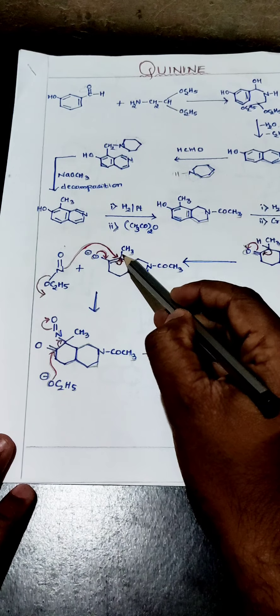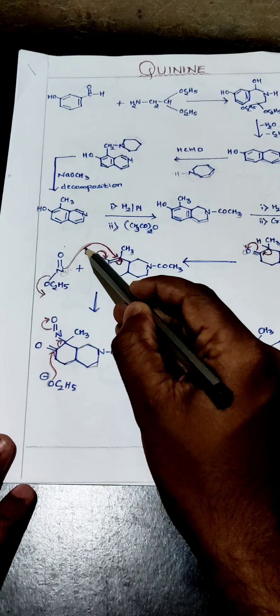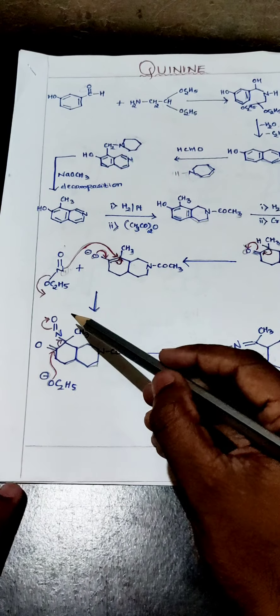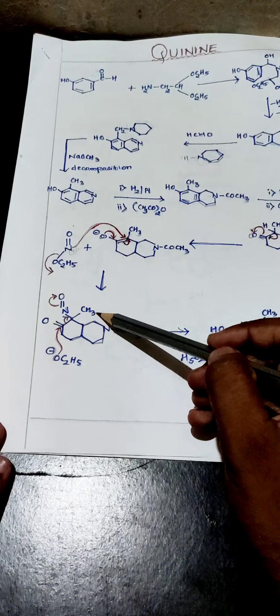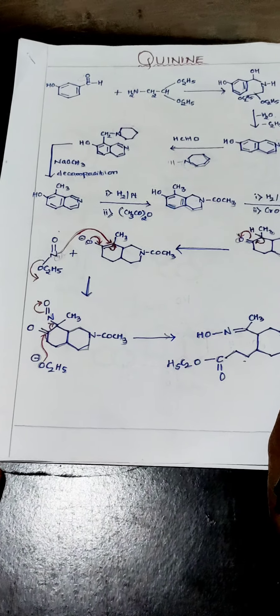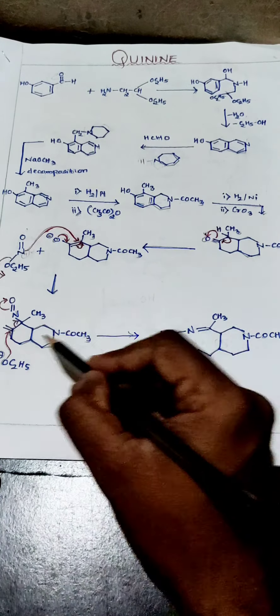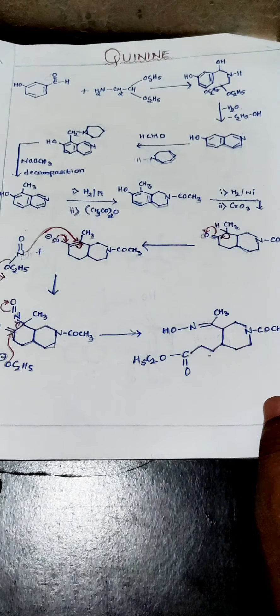The electrons on the oxygen come to this carbon, the double bond shifts, and a negative charge develops on that carbon. OC2H5 leaves and an N-oxide (NO+) forms. This NO+ comes and attacks the carbanion where there is a negative charge. Then the bond between this carbon and the adjacent carbon breaks, giving a positive charge on that carbon, and the OC2H5 minus attaches to it. Overall, this ring breaks.